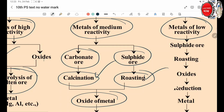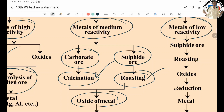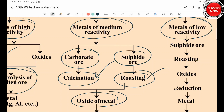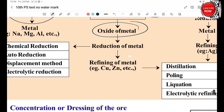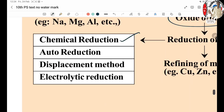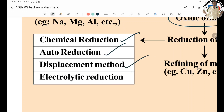Calcination and Roasting: Carbonate Ores undergo Calcination with heat; Sulfide Ores undergo Roasting with heat in the presence of Oxygen. Carbonate and Sulfide ores are converted to Oxide Ores. Types of Reduction: Chemical Reduction, Auto Reduction, Displacement Method, and Electrolytic Reduction.